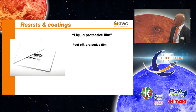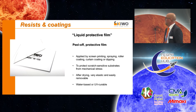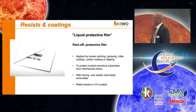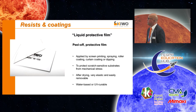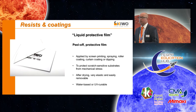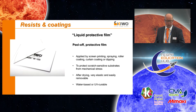A liquid protective film is a peel-off coating. It can be applied by screen printing, spraying, roller coating, curtain coating, or dipping as well. It is used to protect scratch-sensitive substrates from mechanical stress or dust. After drying, you have a very elastic and easily removable film. The available products are water-based or UV curable.